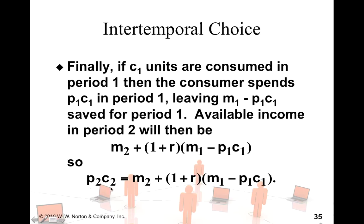So p2 c2, which is the expenditure on the second period, is going to be equal to m2 plus whatever savings that have grown from the last period. Now, because we are drawing everything in c2, c1 space, all that needs to be done is to solve this equation for c2. The simplest way to do that is divide both the sides by p2.